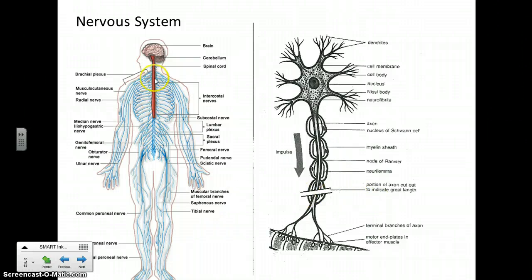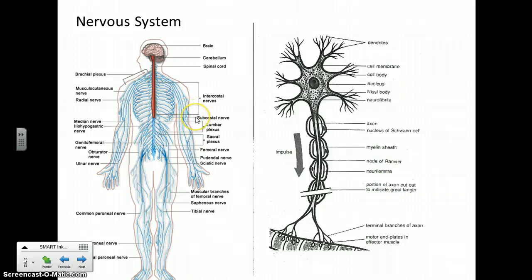As we'll see, the spinal column handles largely reflexive voluntary action. The classic example is when you get hit on the knee with a little mallet, your knee jerks — that's the knee-jerk reaction, and that's something processed in your spinal column.